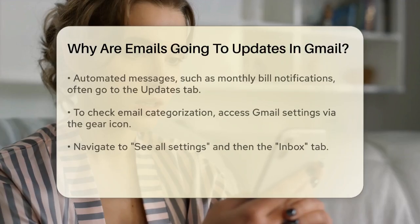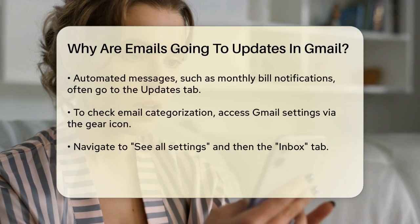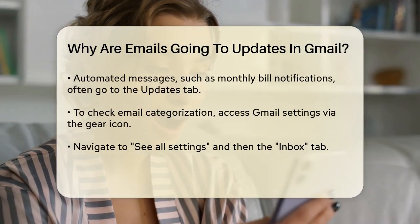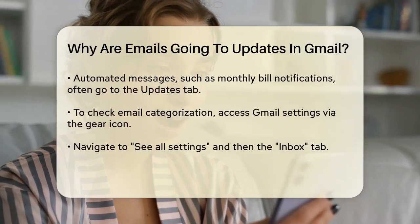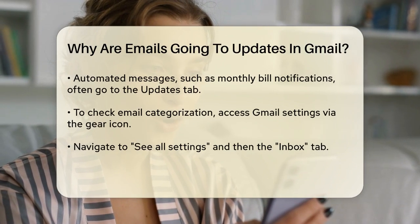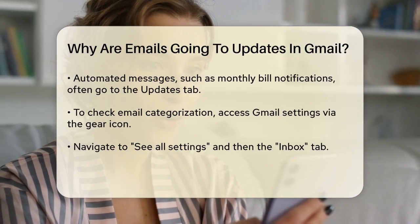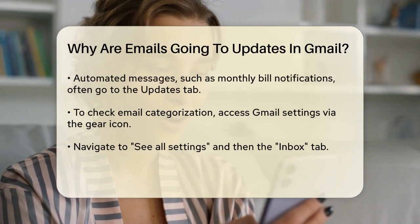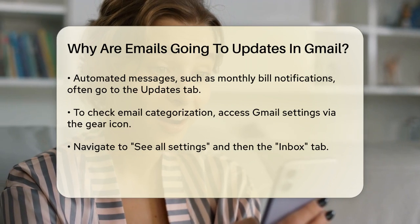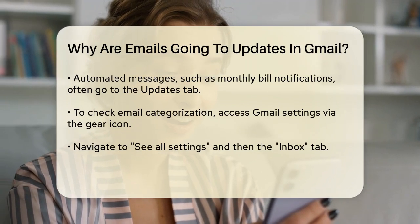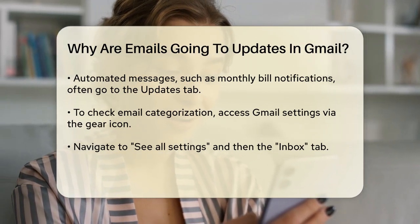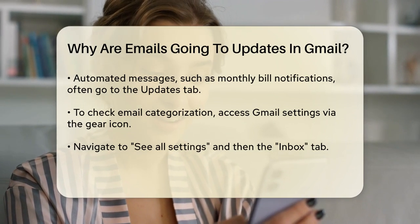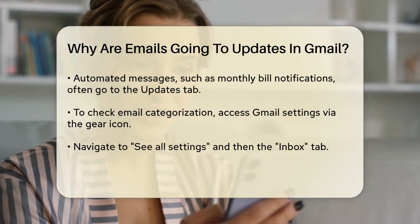When an email lands in the Updates tab, it's because Gmail's algorithms have identified it as an update rather than a personal or social email. This could be due to the content of the email, the sender, or the way the email is formatted. For example, if you receive a monthly bill notification, Gmail might categorize it as an update because it's an automated message rather than a personal one.